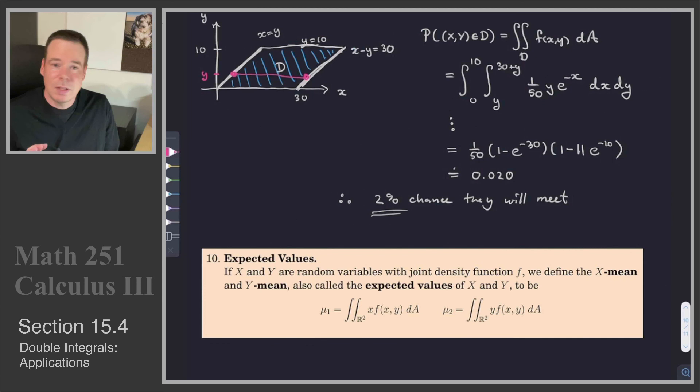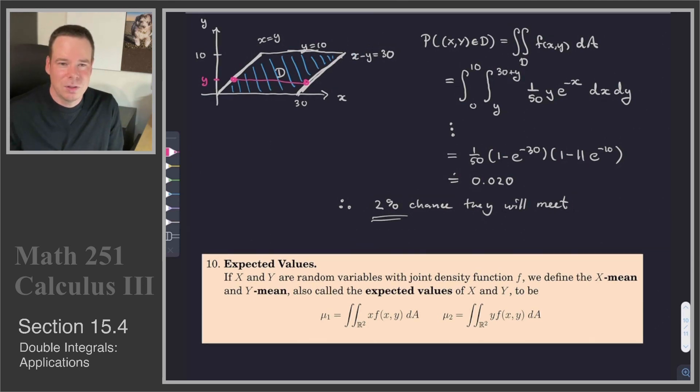So one last thing I want to point out is we had these integrals that we call first moments and second moments in physics. Those same integrals come up in different areas. For example, these first moments we see them here coming up in probability and they're the expected values. If we have two random variables with a joint density function f, then we can talk about their expected values. What is the expected value for the x random variable? What is the expected value for the y random variable? Those expected values are given by these integrals, and these are those first moment integrals that we had for concepts in physics. They come up here and they're the expected value integrals. Alright, that's it for this section on the applications of double integrals. Thanks for watching and we'll see you again next time.